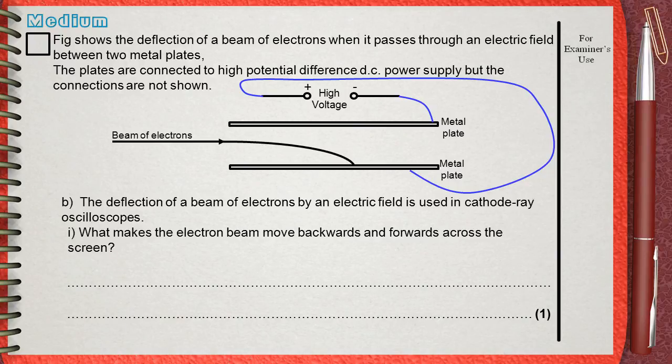This question belongs to the previous one. Question B. The deflection of a beam of electrons by an electric field is used in cathode ray oscilloscopes. What makes the electron beam move backwards and forwards across the screen?